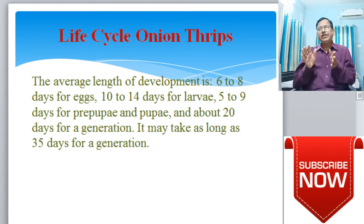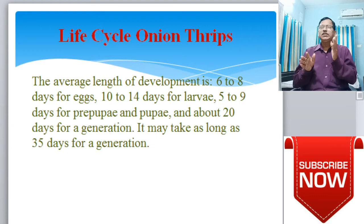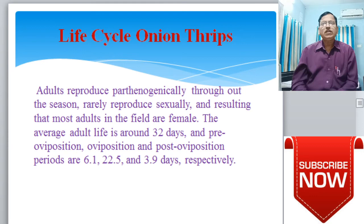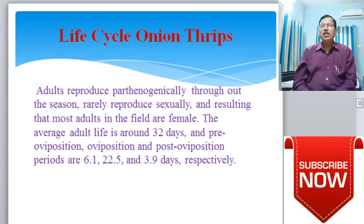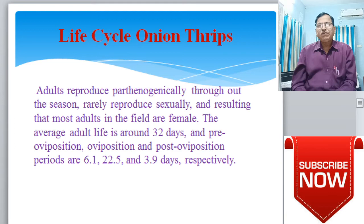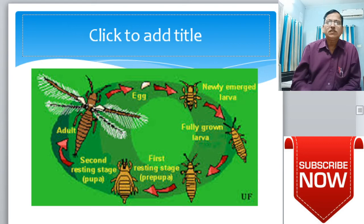The average development periods are: 6 to 8 days for eggs, 10 to 14 days for larvae, 5 to 9 days for pre-pupae and pupae, and about 20 days for a generation — though it may take as long as 35 days. The average adult lifespan is around 32 days. Pre-oviposition, oviposition, and post-oviposition periods are 6.1, 12.5, and 3.9 days respectively.